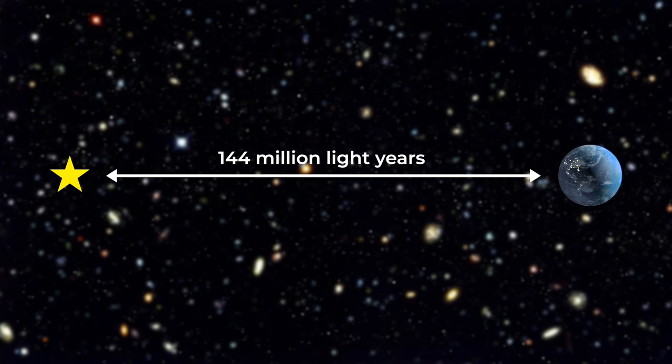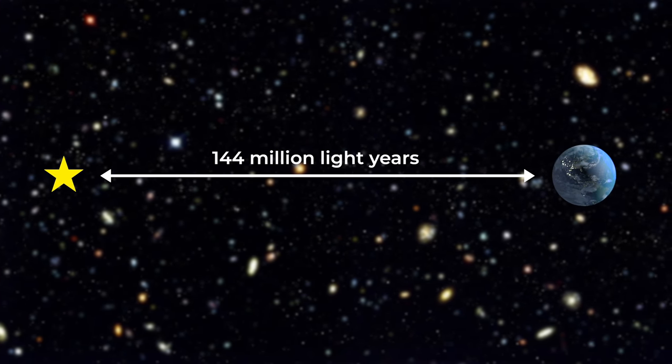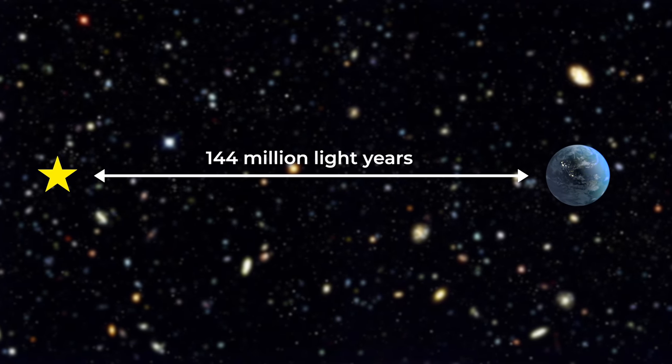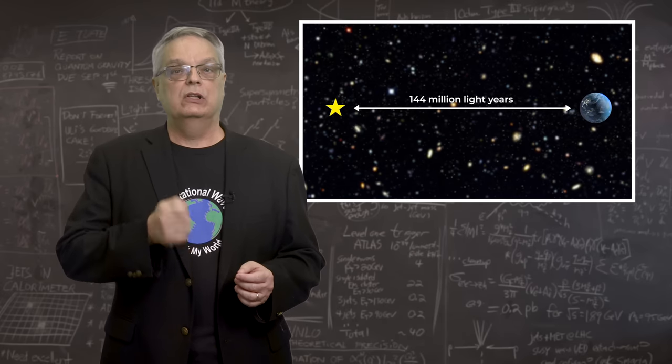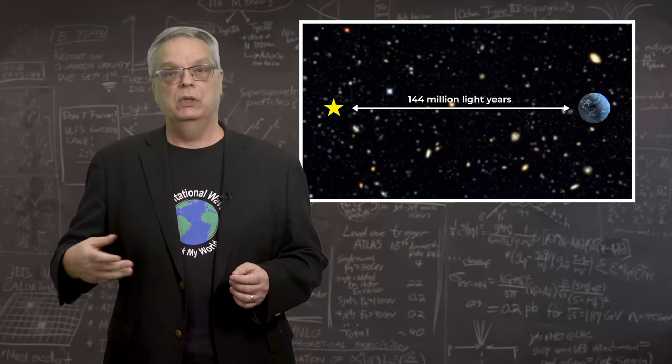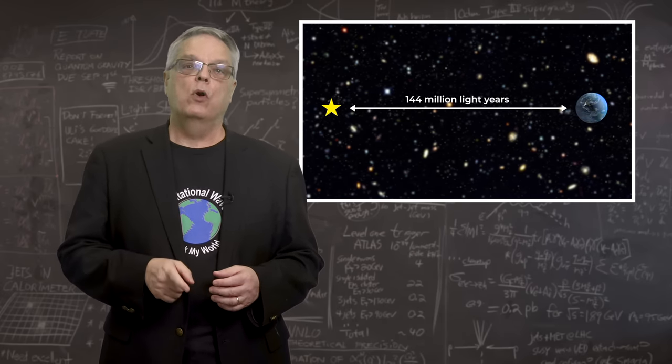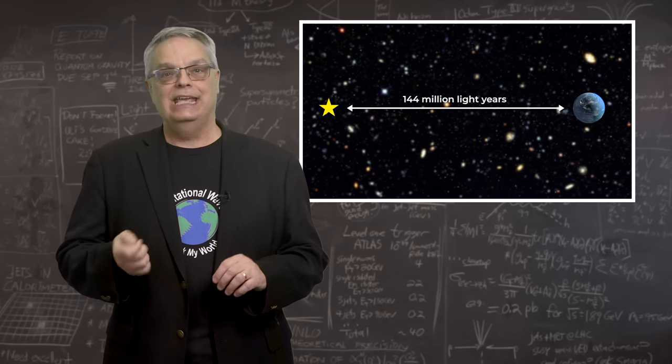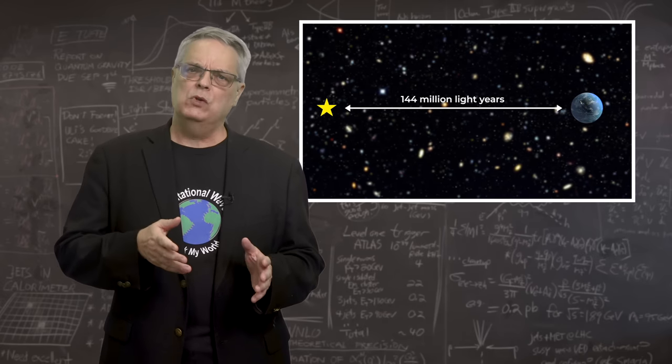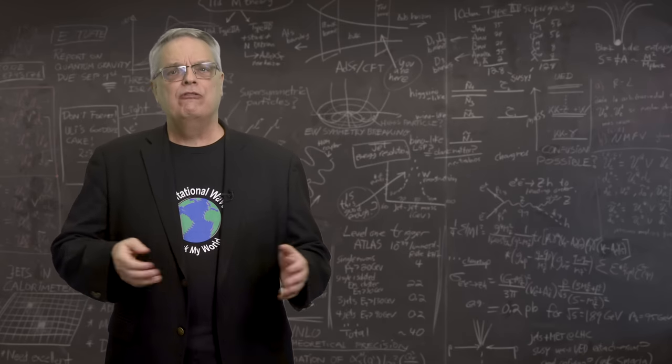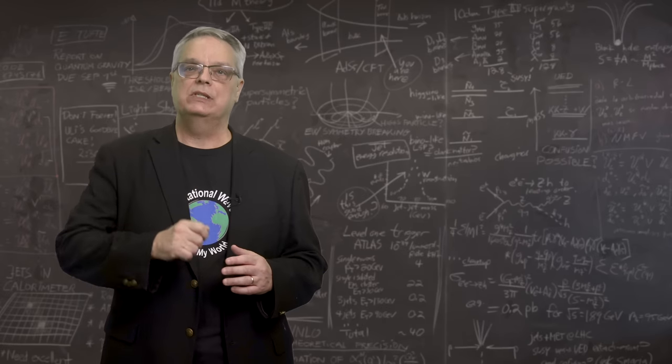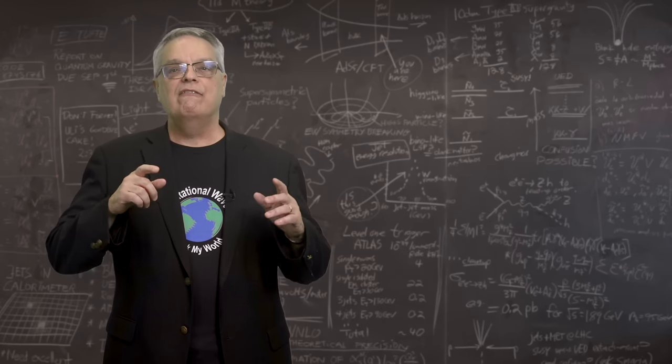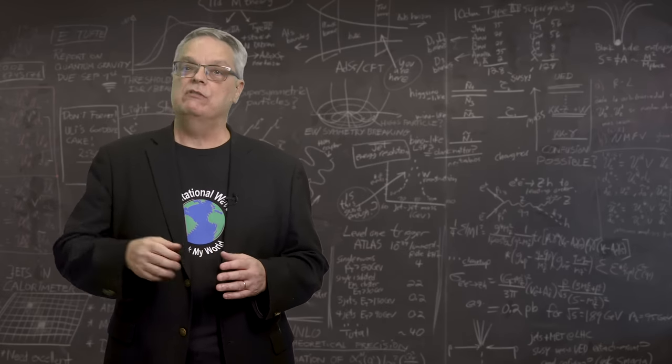NGC 4993 is located about 144 million light years from earth. Given that we know the speed of light, that means that the collision occurred 144 million years ago. Furthermore, the gravitational radiation and gamma radiation were emitted almost exactly at the same time. From this event in which light and gravitational waves were nearly simultaneously created, we can get a very precise handle on the speed of gravity.